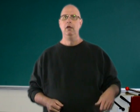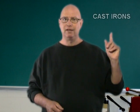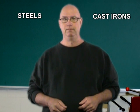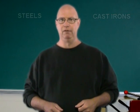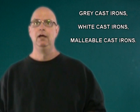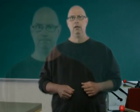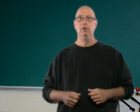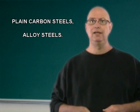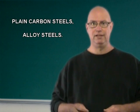Ferrous metals can be divided into two large families. The first family would be the cast irons and the second family would be the steels. These families can be subdivided. Cast irons have three main types: gray, white, and malleable. Steels can be divided into plain carbon steels and alloy steels.